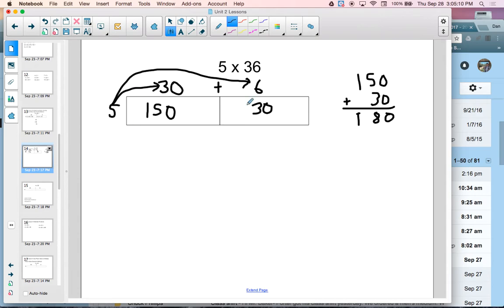And this is a good model for what's really taking place in what the book calls the shortcut method. 36 times 5: 5 times 6 is 30. 5 times 3 is 15, 16, 17, 18.